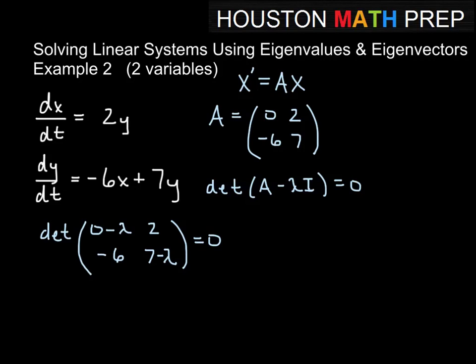And then solving that, taking the determinant of this, that would be negative λ times 7 minus λ minus 2 times negative 6, and that equals 0.